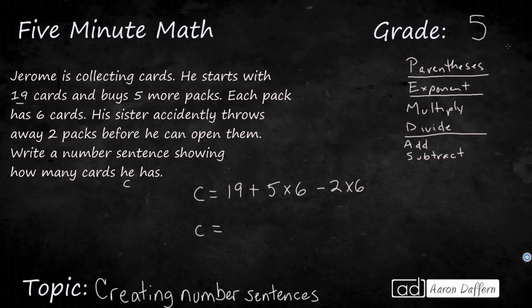Another way to do it would be to keep the 19. What we could do is we could say, you know what, we bought 5 packs, but we lost 2. Then we multiply that by 6. Really, there's just 3 packs. We multiply by 6. Either of those work.